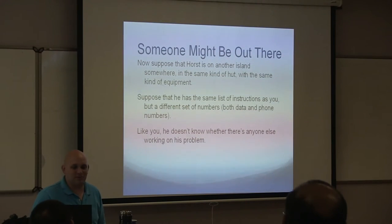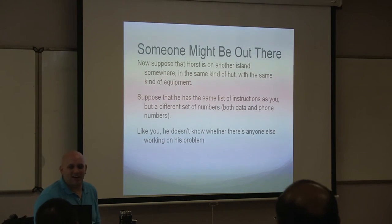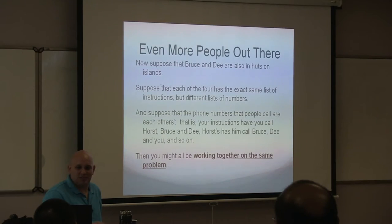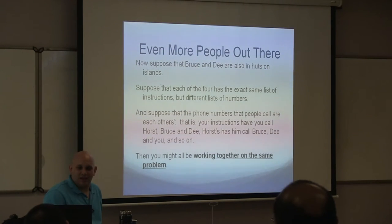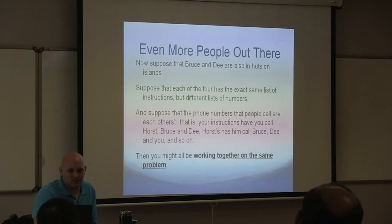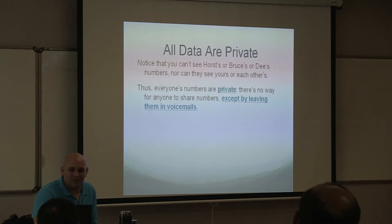He uses people's names. Now suppose that Horst is on another island with the same kind of equipment and the same list of instructions but a different set of numbers. Just like you, he doesn't know if there's anybody else working on the problem. There are two more people, Bruce and Dee — each with the same list of instructions and different numbers. You could all be working together on the same problem, which is what MPI is trying to solve. Your data are all your own, and you have no way of sharing data other than one at a time leaving voicemails.